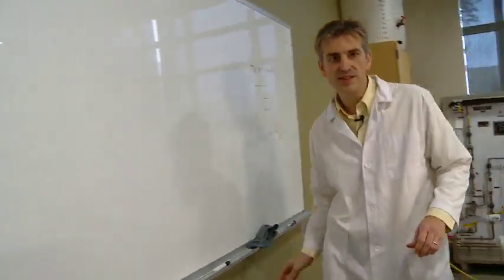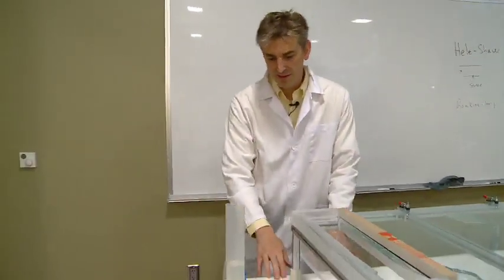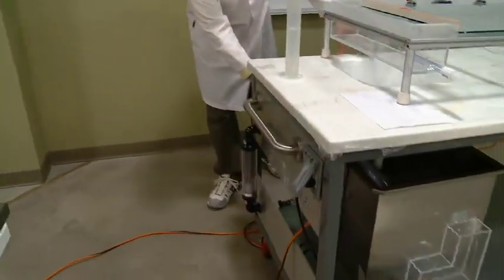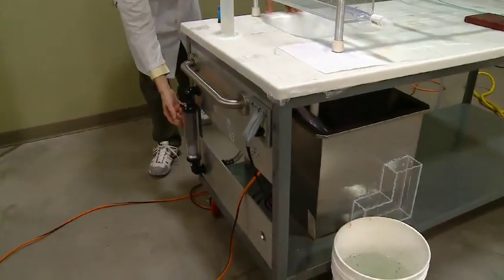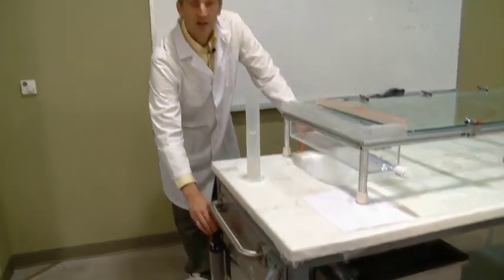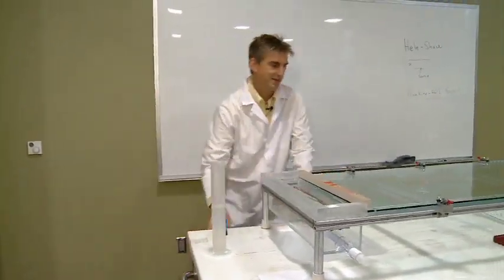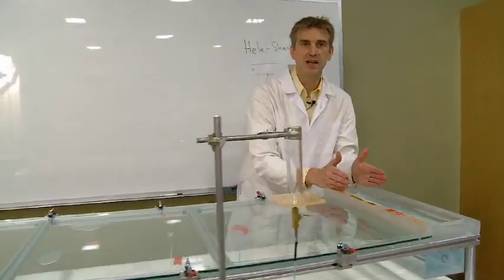So how this works is I've got this table. And this table, underneath there's a large reservoir of water. A pump moves this water through a flow gauge, so I can see how fast it's flowing, up to this inlet section of the table.